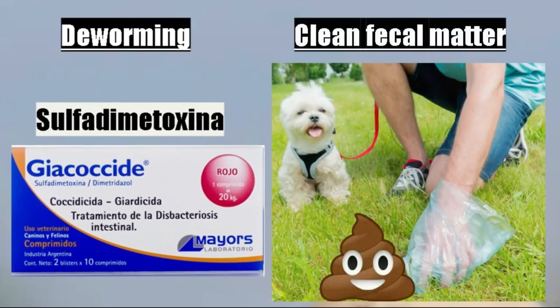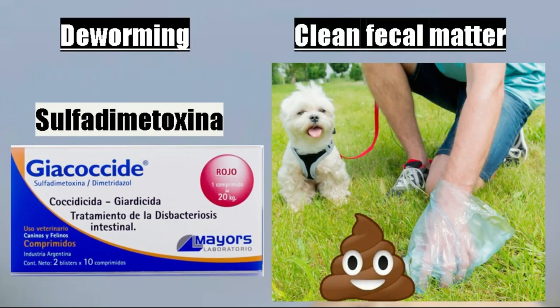We have to constantly clean the fecal matter. Coccidia are especially a problem when there is overcrowding and many puppies, so in those situations you have to clean constantly. Something that negatively affects coccidia is dryness, sunlight, and also ammonium hydroxide. By knowing the Isospora cycle, we can know where to cut this cycle to prevent other animals from getting sick.